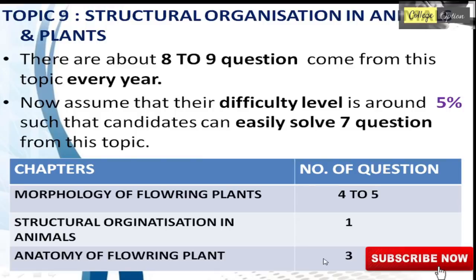The ninth topic is Structural Organization in Animals and Plants, with about 8 to 9 questions each year. The difficulty level is around 5% and candidates can easily solve 7 questions. There are 3 chapters: Morphology of Flowering Plants with 4 to 5 questions — around 50% weight of this topic — Structural Organization in Animals with around 1 question, and Anatomy of Flowering Plants with 3 questions.